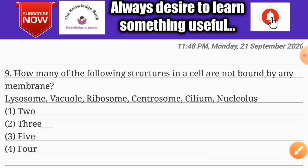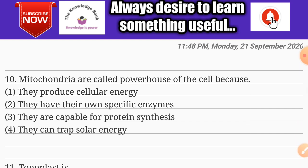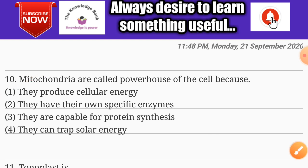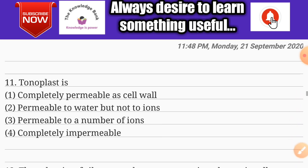Question number ten: mitochondria are called the powerhouse of the cell. What is the reason? Options are: they produce cellular energy, they have their own specific enzymes, they are capable of protein synthesis, they can trap solar energy. The correct answer is option one: they produce cellular energy.